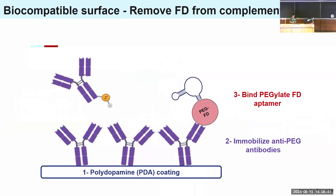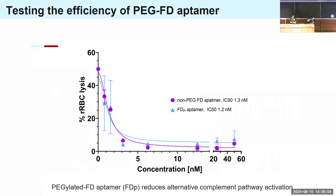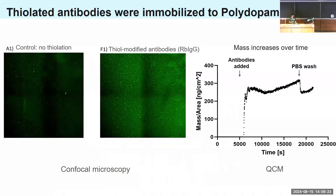Our strategy includes three steps: first, using polydopamine or PDA as our base coating; second, immobilizing anti-PEG antibodies on the surface of this PDA; and third, binding a pegylated factor D aptamer which can inhibit the activity of factor D. We first tested to see if our pegylated factor D aptamer actually works — and with increasing concentrations, we could decrease red blood cell lysis. Our next step was immobilizing our antibodies on the surface through biotinylation, validated by tagging antibodies with fluorescence-tagged secondary antibodies and imaging with confocal microscopy. We observed more fluorescence compared to the control using non-biotinylated antibodies, confirming successful immobilization.